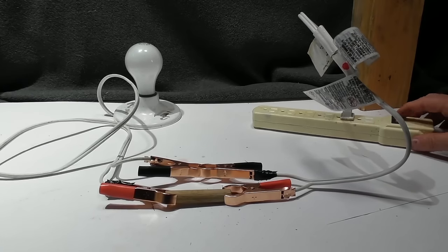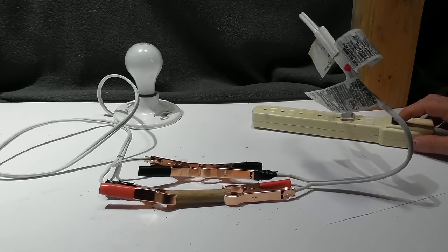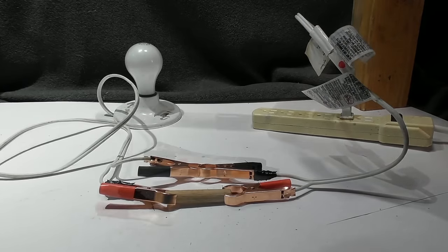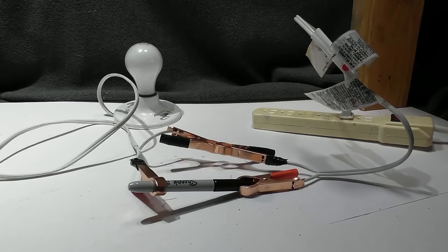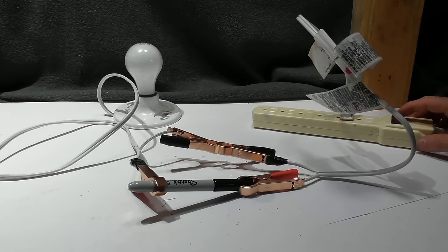After the block of wood, let's try this. How about we try a sharpie. It's plastic, it's hooked up. We go to the switch and nothing happens. So it is an insulator.